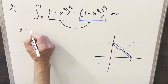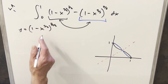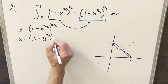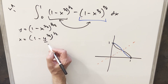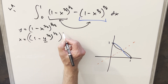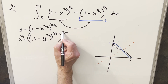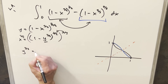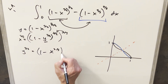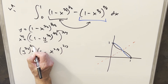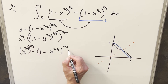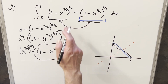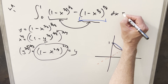I'll set the first function equal to y. To determine the inverse, I swap the variables, writing x equals (1 minus y^(3/2))^(3/2). Then I take the two-thirds power on both sides so the powers cancel, and solving for y^(3/2) we get one minus x^(2/3). Then taking the two-thirds power on both sides again, the powers cancel and we get y equals (1 minus x^(2/3))^(2/3). This is exactly the same as the second function, so we've found that the inverse of the first function is just the second function. This confirms they are inverses, and so our integral is going to be zero.